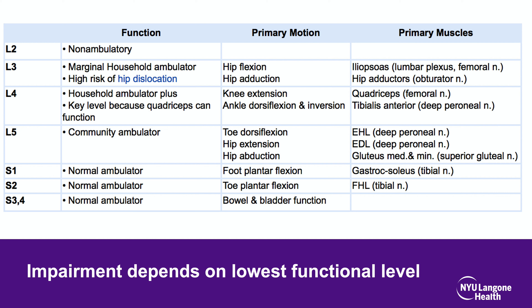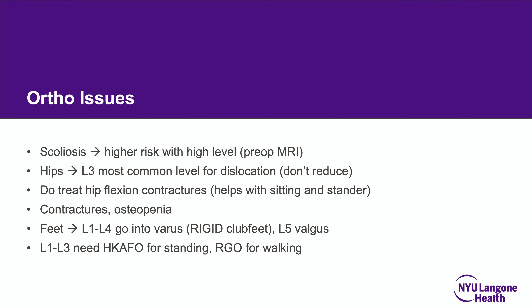To be a household or community ambulator in myelodysplasia, a child must have at least L4 level function. Parents of an L2 child can be counseled early that their child will likely be non-ambulatory. Scoliosis risk is higher with higher lesion levels; preoperative MRI is essential given the risk of congenital malformations. The L3 level is the most common level for hip dislocation — do not reduce them, as they will typically redislocate within 6 to 12 months.